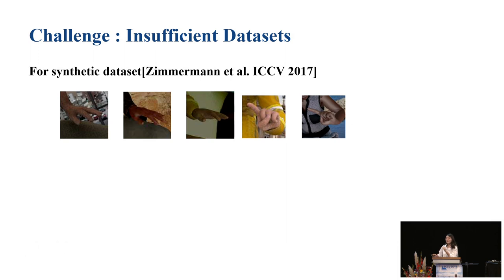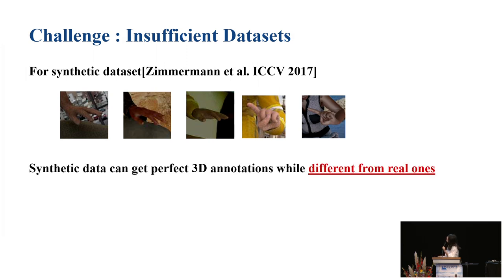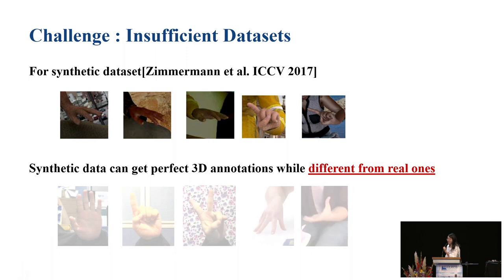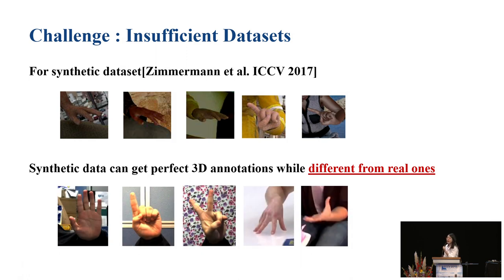Some people tend to solve this problem by rendering synthetic datasets. We can have hand models, project them into different viewpoints, add different backgrounds, and get datasets. However, although they can get perfect 3D annotations, they are a little bit different from real ones. As we can see, the first row is synthetic dataset and the second row shows samples of real images. The texture, lighting, and many other things are different, which means if we directly use models trained on synthetic datasets and apply them to real ones, performance differs.